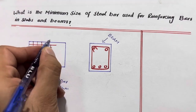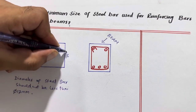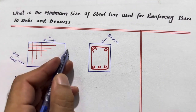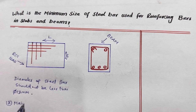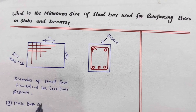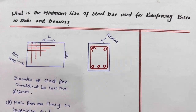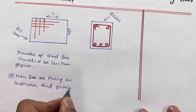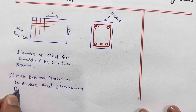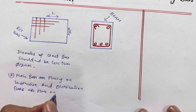Main bars are placed in the length direction — this is the length and this is the width. When we place the steel reinforcement in the length direction, that is called the main bar. Main bars are placed lengthwise, and distribution bars are placed widthwise.